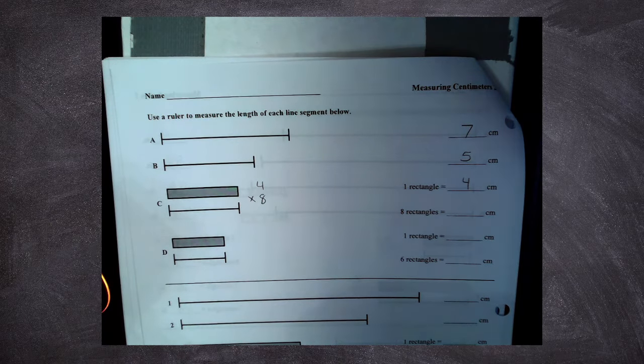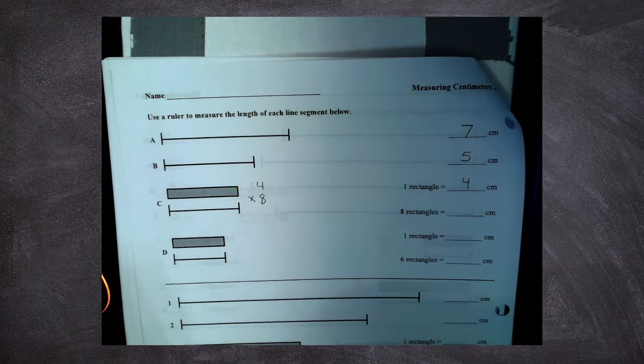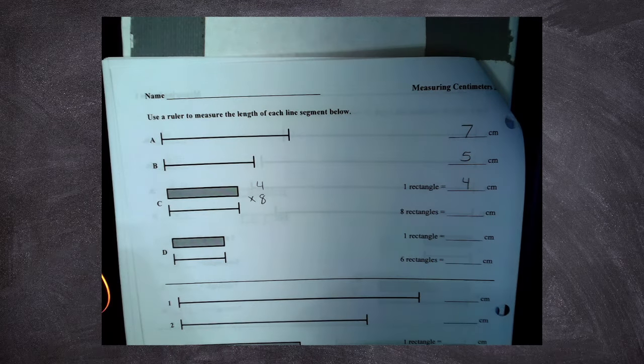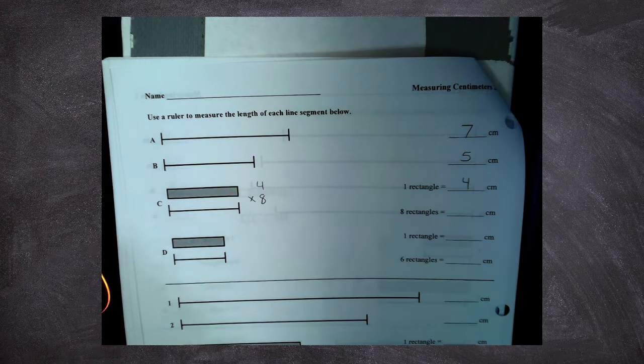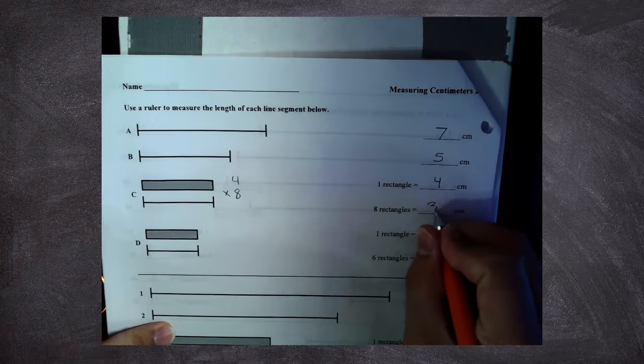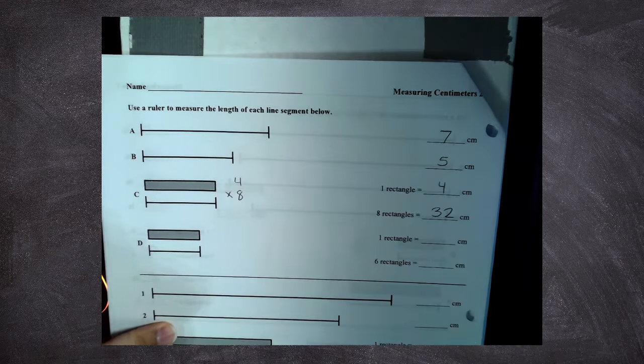Okay. What would that give me? Four times eight would be... Ezekiel? It's okay, Jada. 32. 32. So eight rectangles would be 32 centimeters.